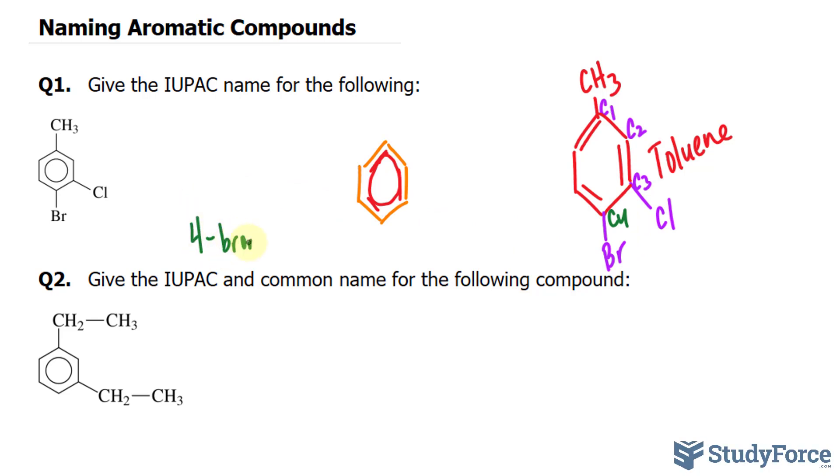Now you're going to see in question number two that we have this ring, this aromatic ring again. And normally for aromatic compounds, you end with the word benzene. Okay, that's a benzene ring.